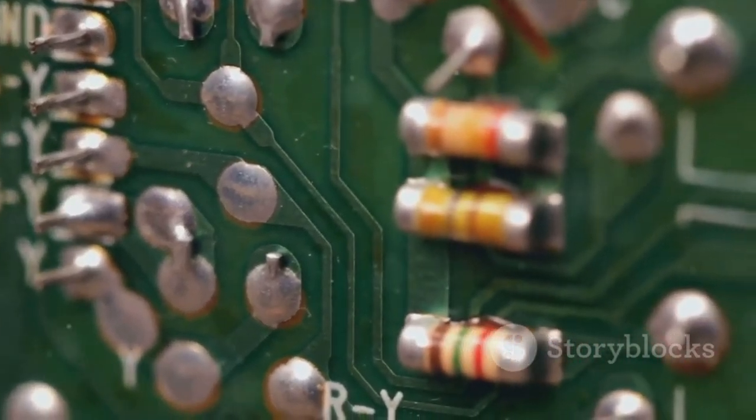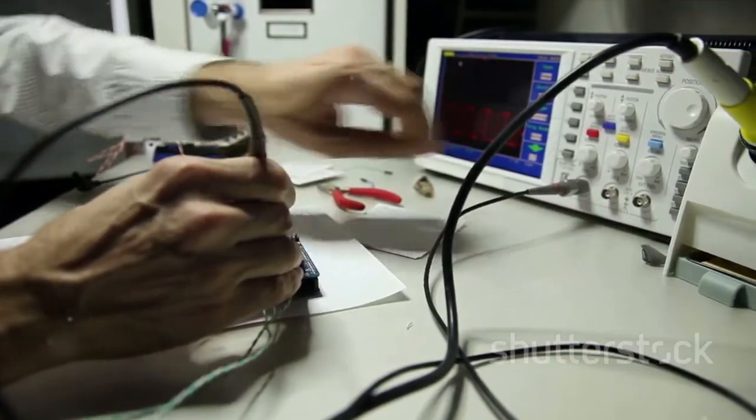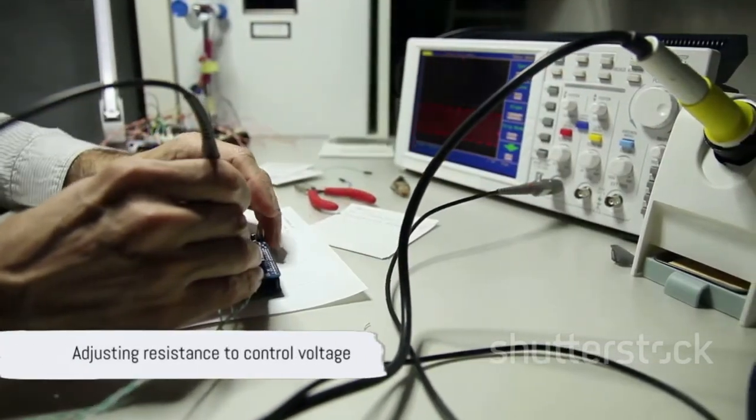So whether it's a rotary or linear potentiometer, the principle is the same, adjusting resistance to control voltage. And that's how you control the volume on your speaker.